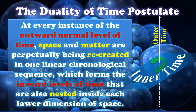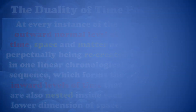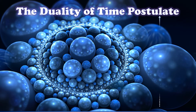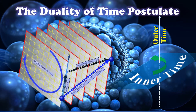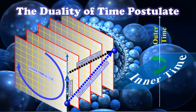The duality of time postulates states that at every instance of the outward normal level of time, space and matter are perpetually being recreated in one linear chronological sequence, which forms the inward levels of time that are also nested inside each lower dimension of space. This means that at every instance of the real flow of time there is only one metaphysical point, that is the unit of space-time geometry, and the universe is a result of its perpetual recurrence in the inner levels of time.